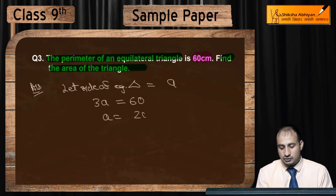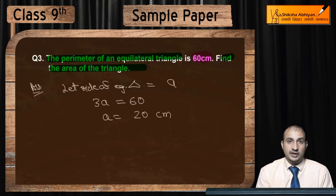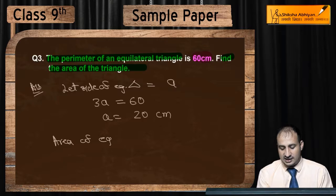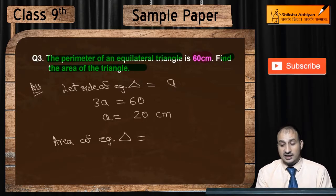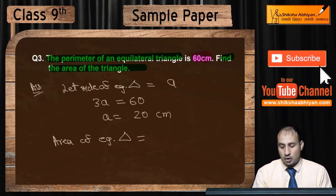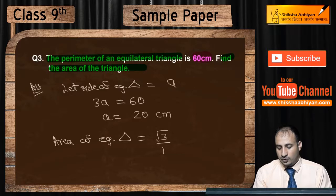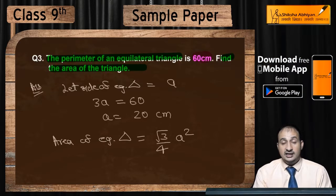This is the side of the equilateral triangle. Now area of equilateral triangle is root 3 by 4 a square. This is root 3 by 4 multiplied by side squared.